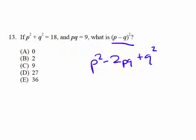And then once you've done that, well, the rest is cake, right? The rest is just substitution. p squared plus q squared, this plus this is just 18, right? And pq is 9, so minus 2 times 9.